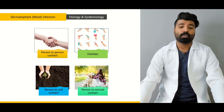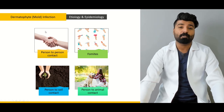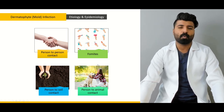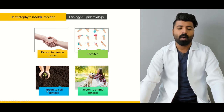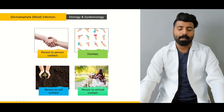Next, we're going to talk about dermatophyte infection or mold infection — its etiology and epidemiology. We're going to talk about how it spreads through person-to-person contact, what fomites are and their roles in causing this pathology, why a person who comes in contact with soil has a higher chance of getting this pathology, and how person-to-animal contact occurs.